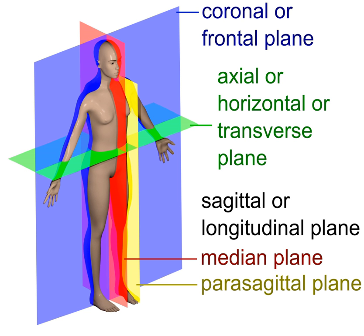The midclavicular line is a line running vertically down the surface of the body passing through the midpoint of the clavicle. In addition, reference may be made to structures at specific levels of the spine, e.g., the fourth cervical vertebra, abbreviated C4, or the rib cage, e.g., the fifth intercostal space. Occasionally in medicine, abdominal organs may be described with reference to the trans-pyloric plane, which is a transverse plane passing through the pylorus.